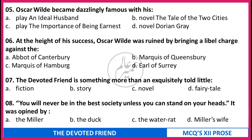Oscar Wilde became dazzlingly famous with his (a) play An Ideal Husband, (b) novel The Tale of the Two Cities, (c) play The Importance of Being Earnest, (d) novel Dorian Gray. At the height of his success, Oscar Wilde was ruined by bringing a libel charge against the (a) Abbot of Canterbury, (b) Marquis of Queensbury, (c) Marquis of Hamburg, (d) Earl of Syria. The Devoted Friend is something more than an exclusively told little (a) fiction, (b) story, (c) novel, (d) fairy tale. 'You will never be in the best society unless you can stand on your heads' - it was opined by (a) The Miller, (b) The Duck, (c) The Waterrat, (d) Miller's Wife. Pause the video, write down your answers, and then resume.